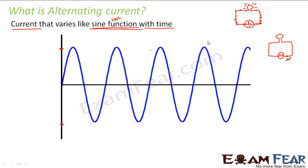Why do the electrons move like that? We will see that in the next slide. Since the electrons move back and forth, we get an alternating current — moving clockwise, then anti-clockwise, then clockwise, then anti-clockwise. This is how we get a curve like a sine wave for alternating current, where the y-axis gives the direction of the current and the x-axis gives time.